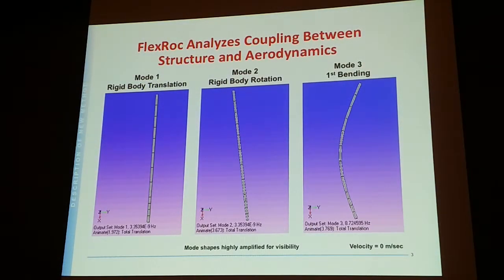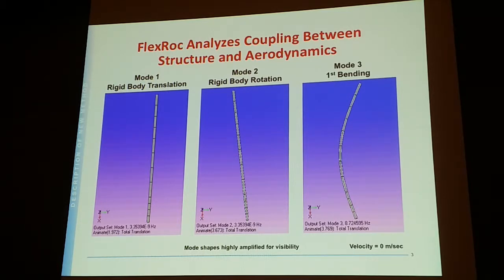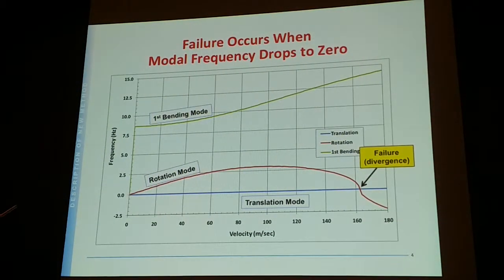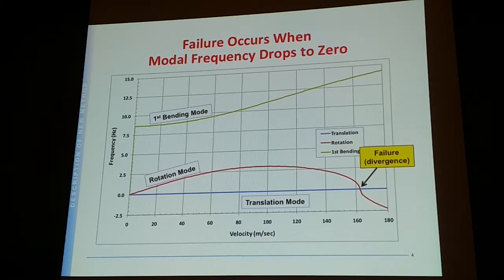In terms of what's important for flexible rockets, it's the second and third modes. The first mode is where the rocket is just rotating as a rigid body. The other is where you start flexing the body. When the aerodynamics generate forces enough to flex the body and interact with the other modes, that's where you can get failure. If the mode frequency reaches zero within your flight envelope, your rocket will buckle, and that's what we're trying to avoid.